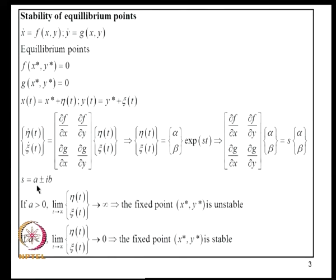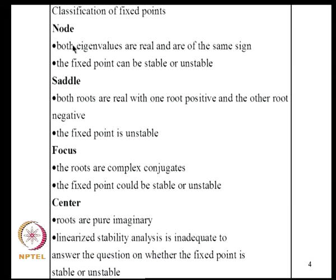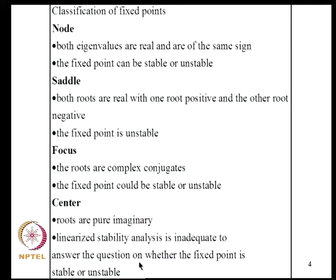When A equals zero the perturbations are periodic and the question of whether the fixed point is stable or unstable remains unresolved. Depending on the nature of the eigenvalues we classify fixed points as node, saddle, focus, and center. In a node both eigenvalues are real with the same sign. In a saddle both roots are real with one positive and one negative, making the fixed point unstable. For a focus the roots are complex conjugates; for a center they are pure imaginary and linearized stability analysis is inadequate.